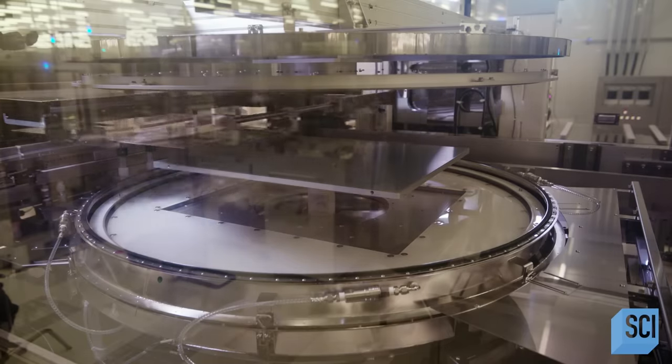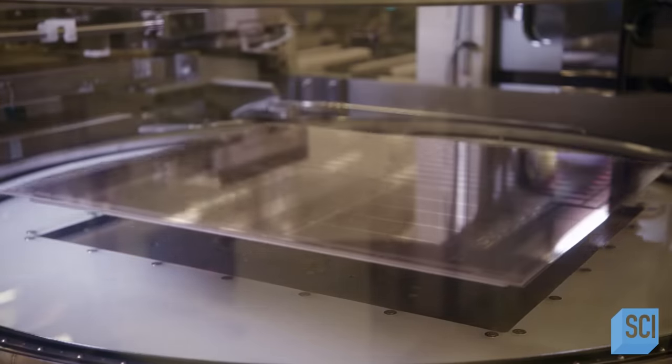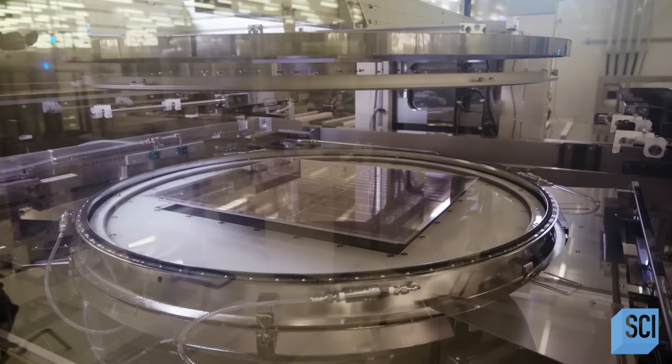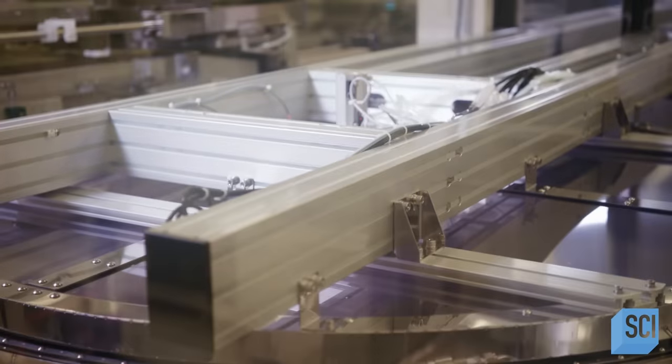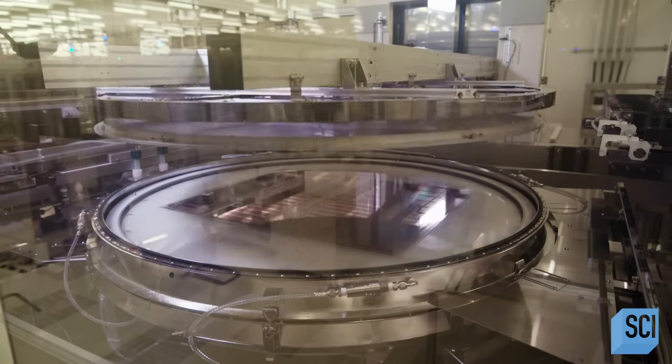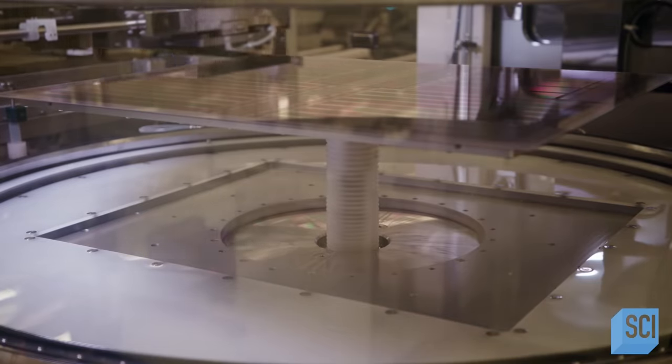The spin coater evenly spreads the material across the film. Nozzles apply an organic solution that acts as a booster for the semiconductors. The spin coater closes and rotates the glass carrier to spread the deposited material by centrifugal force.